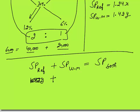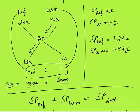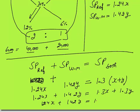Selling price of the refrigerator is 1.24x. Selling price of the washing machine with 42 percent profit is 1.42y. Now overall profit is 30 percent. The total selling price equals total cost price times 1.3, so: 1.24x + 1.42y = 1.3(x + y). Multiplying by 100: 124x + 142y = 130x + 130y. Solving this gives 6x = 12y.